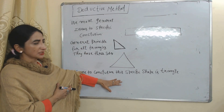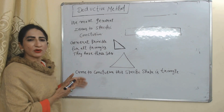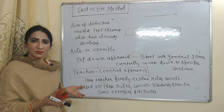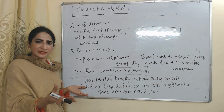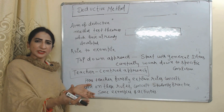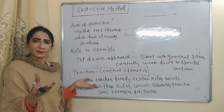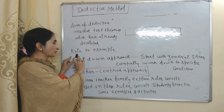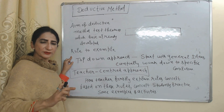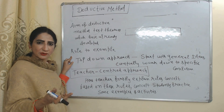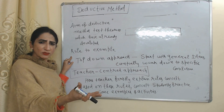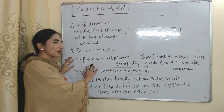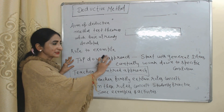The main aim of the deductive method is to test theories which have already been developed based on some general principle. Here we move from rule to example — first we study some rules, and based on these rules we set some examples and principles. This is a top-down approach.